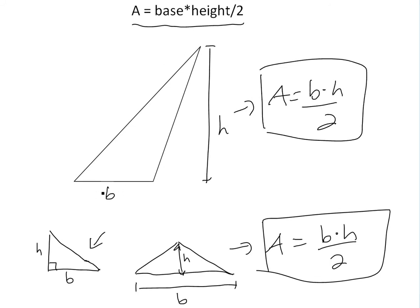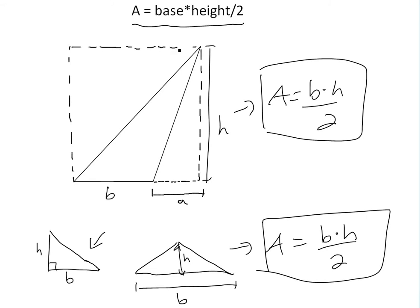If we call this b and this h, all we have to do — similar to my proof for those — is draw a rectangle around this triangle. If we draw one down here, this is height h, we'll call this length a. Now we're going to enclose the triangle with a rectangle, and then we'll find the area compared to the rectangle. This length here is h, and this one here is just b plus a — the addition of both of these.